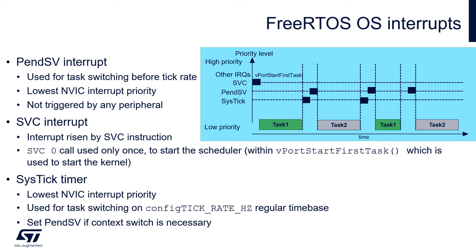The SysTick timer and its interrupt are used to give a regular time slice for each task, and it triggers PendSV interrupt to switch the context. Please remember that PendSV and SysTick have the lowest possible NVIC priority level, because we don't want any negative interaction between those two and other interrupts, and because it is not good if the operating system is blocking or delaying the hardware interrupts of the system. This is why PendSV and SysTick have the lowest possible interrupt level within the system.